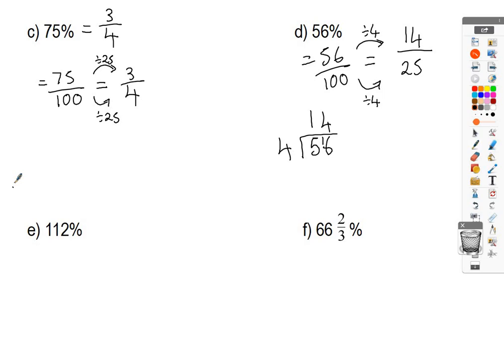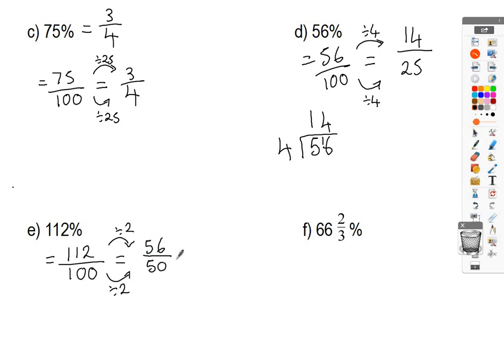For E, 112% — a lot of people think you can't have a percentage higher than 100%, but you can. To simplify 112%: percent means out of 100, so write 112 over 100. The number that comes to mind is 2, so divide both numerator and denominator by 2 to get 56 over 50. Then 2 goes into both 56 and 50 again, giving 28 over 25, which is in its simplest form. You could also write that as a mixed number, depending on what the question asks.